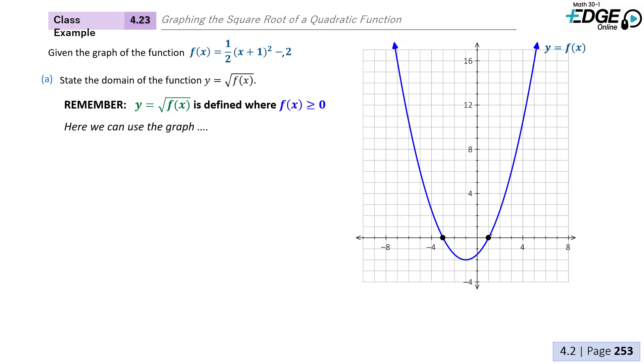So important points here are going to be our x-intercepts. Because the only place that our y values are greater than zero are going to be up here, right? Everything's greater than zero up there on both sides.